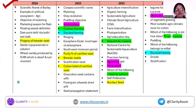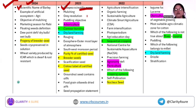Let's now go through the PYQs for the last four years. In 2024, the first question is on the scientific name of barley. In 2023, the question is also on a scientific name. If you are an agriculture student, it is easy for you to identify and eliminate the options for scientific names.